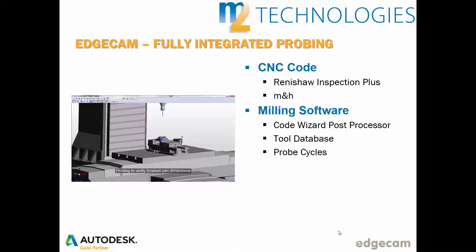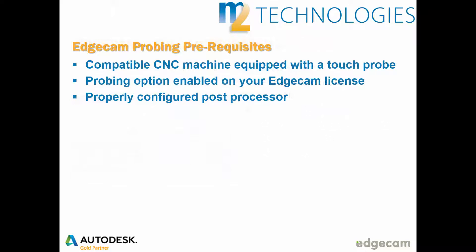These probe cycles are similar to other events in the machining sequence, allowing the user full control of the probe commands and simulation that accurately predicts CNC machine movement with full collision avoidance checking. The requirements are a compatible CNC machine equipped with a touch probe, the appropriate probing option enabled on your Edgecam license, and a properly configured post processor.